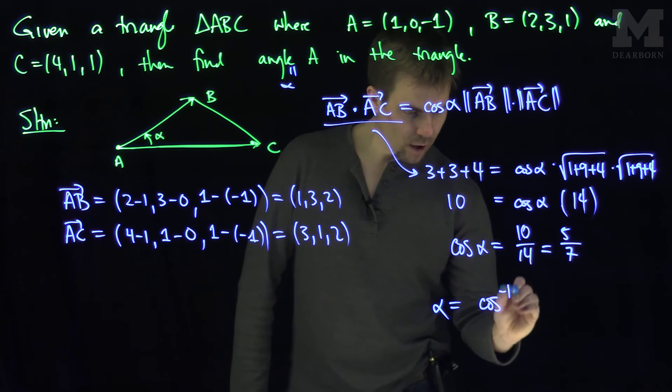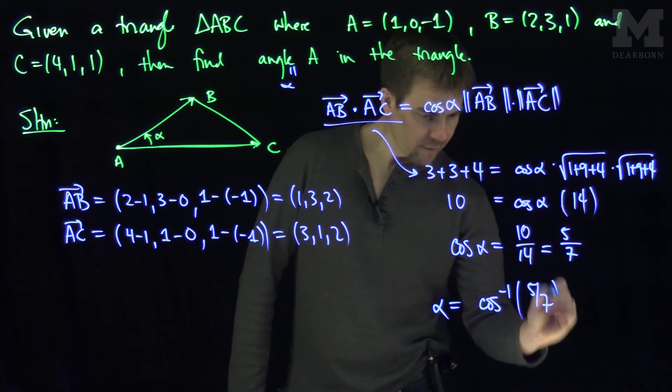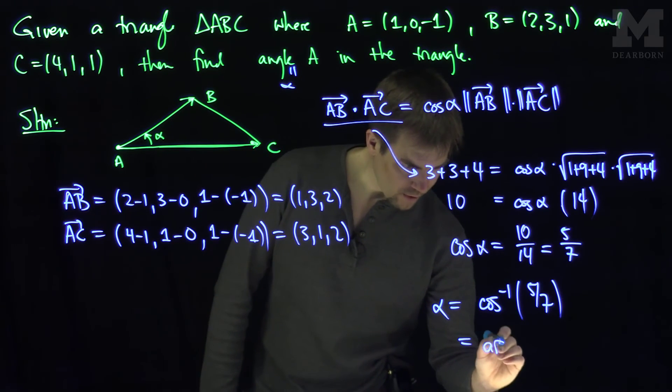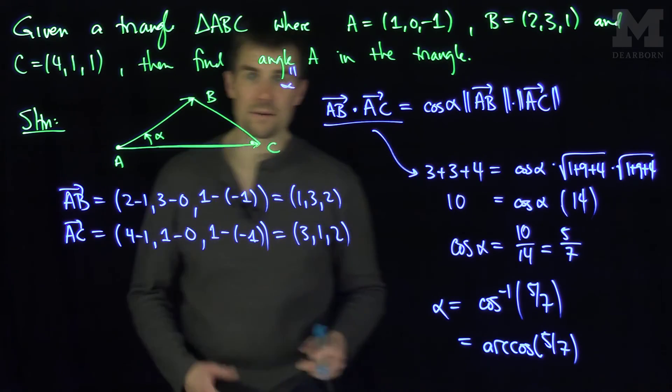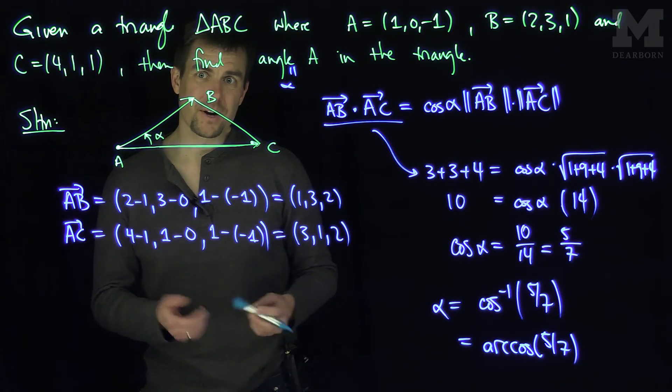is just going to be the inverse cosine, or the arc cosine, of 5 over 7. So sometimes people write this as arc cosine for the argument. Arc cosine of 5 over 7. And that's the angle A in the triangle.